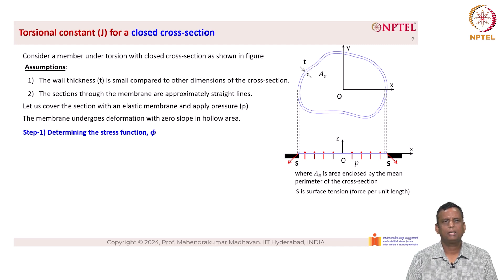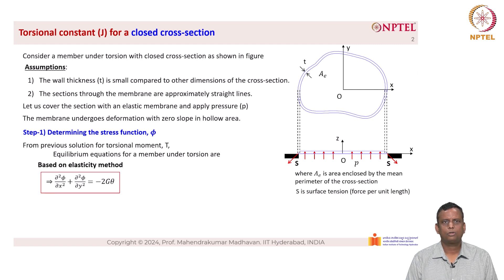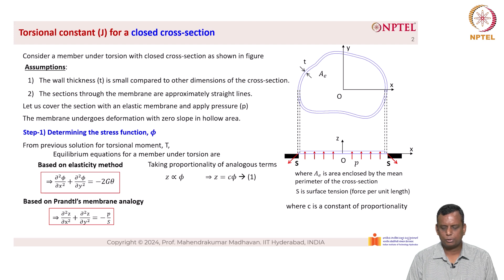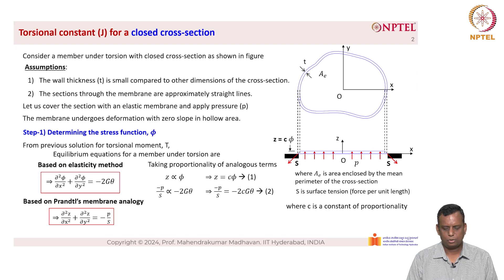Step 1 is to determine the stress function phi. From the previous solution for torsional moment T, the equilibrium equation for a member under torsion based on the elasticity method is: ∂²φ/∂x² + ∂²φ/∂y² = −2Gθ. Based on Prandtl's membrane analogy, it is: ∂²z/∂x² + ∂²z/∂y² = −p/S. Taking proportionality of analogous terms, z is proportional to phi, implying z = c·φ (equation 1), where c is the constant of proportionality. Thus, −p/S = −2cGθ (equation 2).